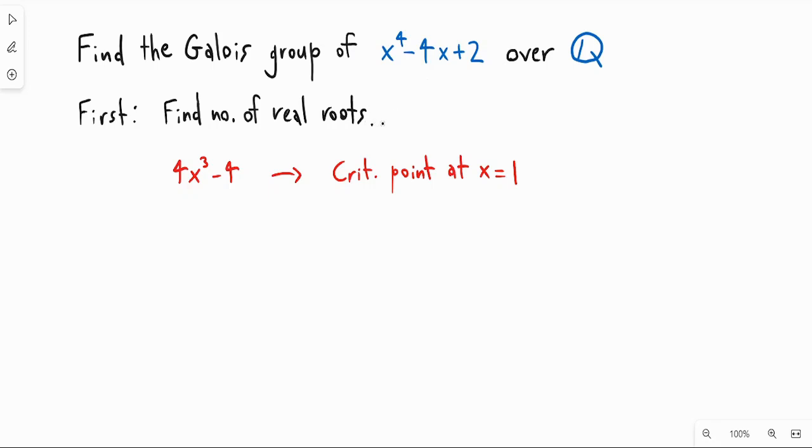So this is the only point where the polynomial is going to change from increasing to decreasing. And so based on that, if you plug in 1 into this polynomial and you play around with the derivative a little bit, it's easy to see that it has this kind of shape like that. And so it has two real roots.